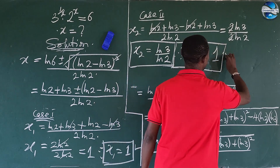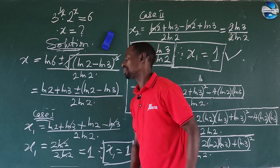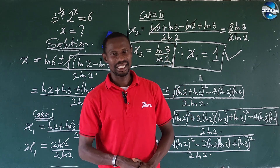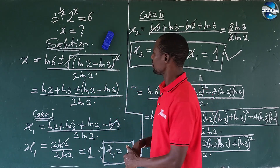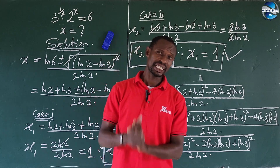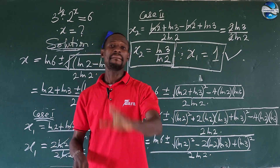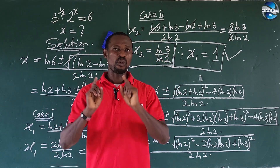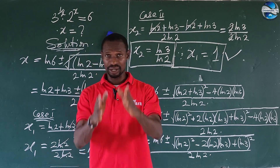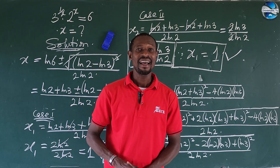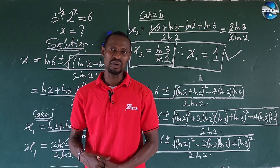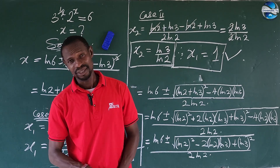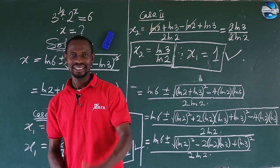So the two values that satisfy our original equation are x₁ equals 1 and x₂ equals ln(3)/ln(2). This brings us to the end of this math class. If you learned something from this tutorial, give the video a thumbs up, drop questions in the comments, and thanks for watching Online Maths TV.